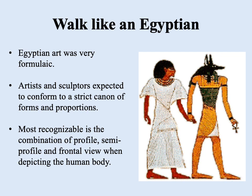Probably most famous is the profile, where you have both a side and frontal profile combined — this idea of walking like an Egyptian. Even today if you said 'walk like an Egyptian' you'd have a mental image of what that looks like. So definitely this combination of profile and semi-profile frontal view when depicting the human body. Another very familiar element of Egyptian art is where you have the human body with the head of an animal — those very often represented different gods and goddesses.